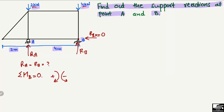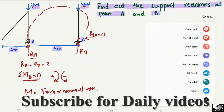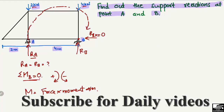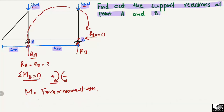We identify all forces that create a moment about point B. The moment equals force multiplied by the perpendicular distance (moment arm). Starting with Ra: it acts upward and creates a clockwise moment about B, so it is positive. Ra multiplied by its moment arm — the perpendicular distance from Ra to point B — which is 4 meters.